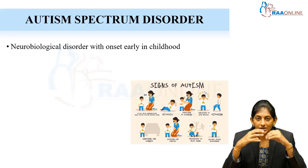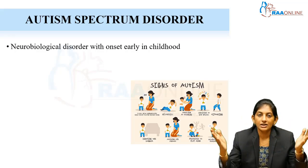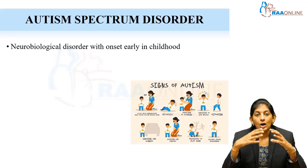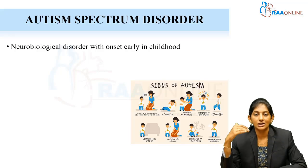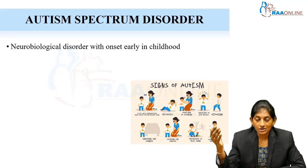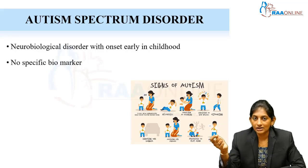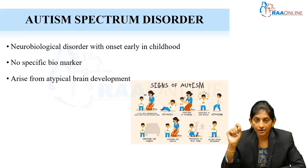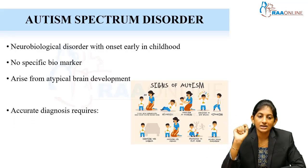Autism spectrum disorder is a neurobiological disorder, and as pediatricians we are really interested in it because the onset is in early childhood — even during the late part of infancy. We tend to screen these children around 16 to 18 months and then come to a diagnosis. The earlier the diagnosis, the more favorable the prognosis and initiation of treatment. There is no specific biomarker — you cannot do a blood investigation or any neuroimaging to confirm ASD. It must meet certain specific criteria for diagnosis, and ASD arises from atypical brain development.